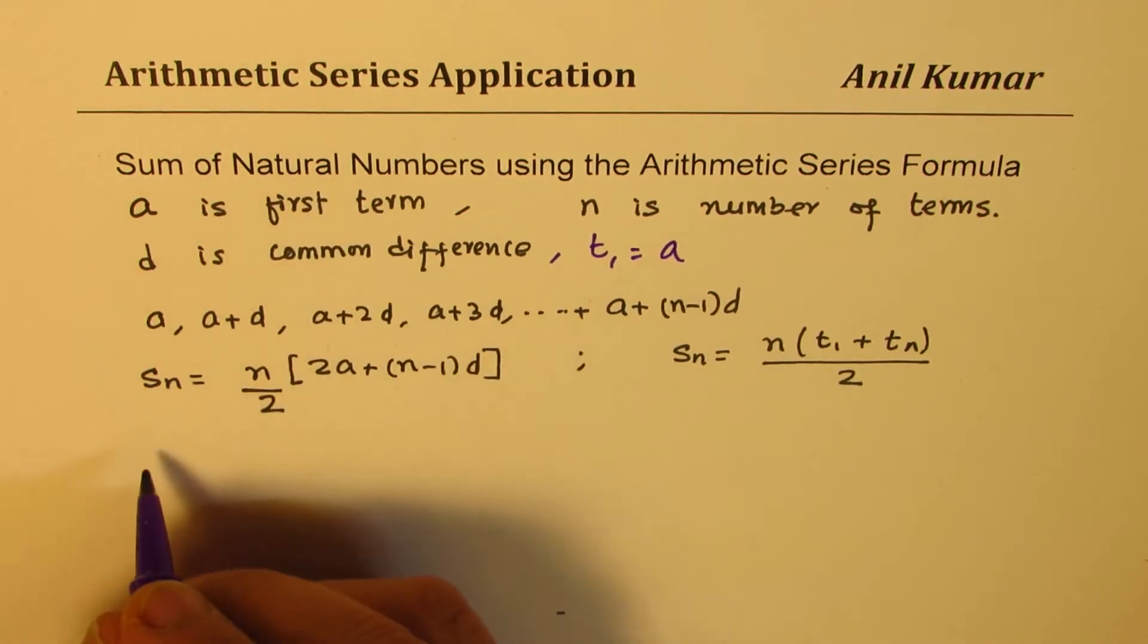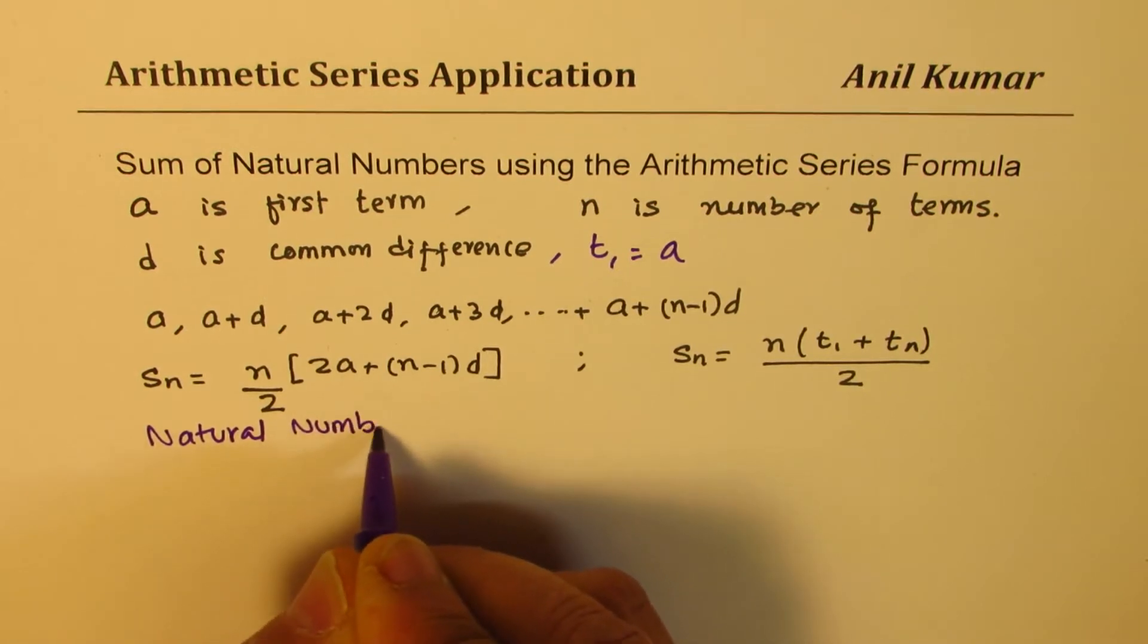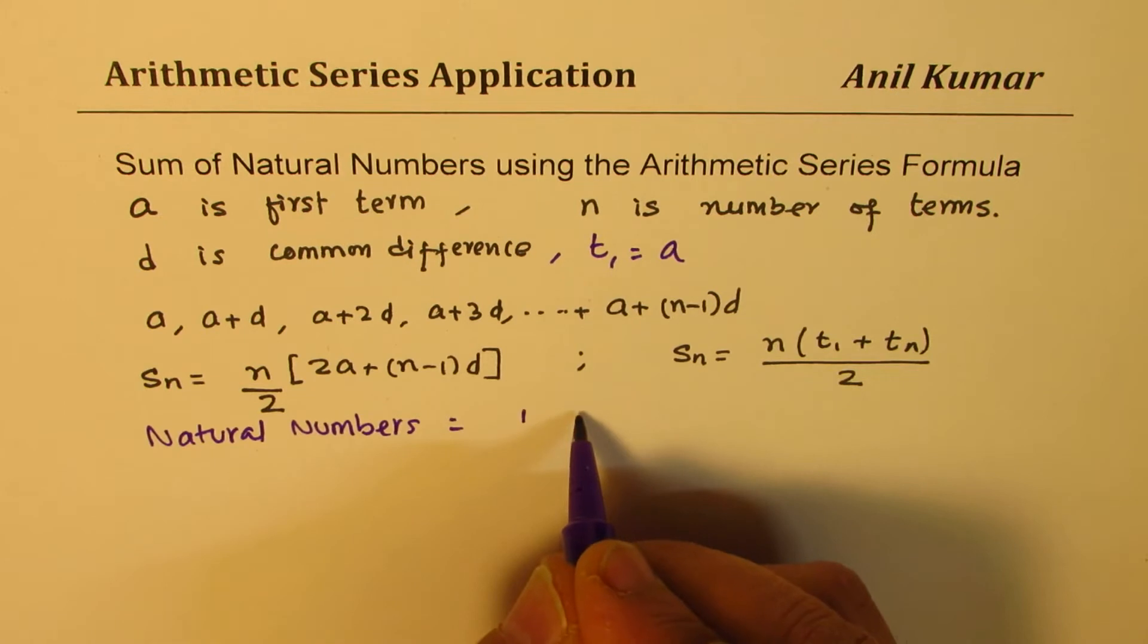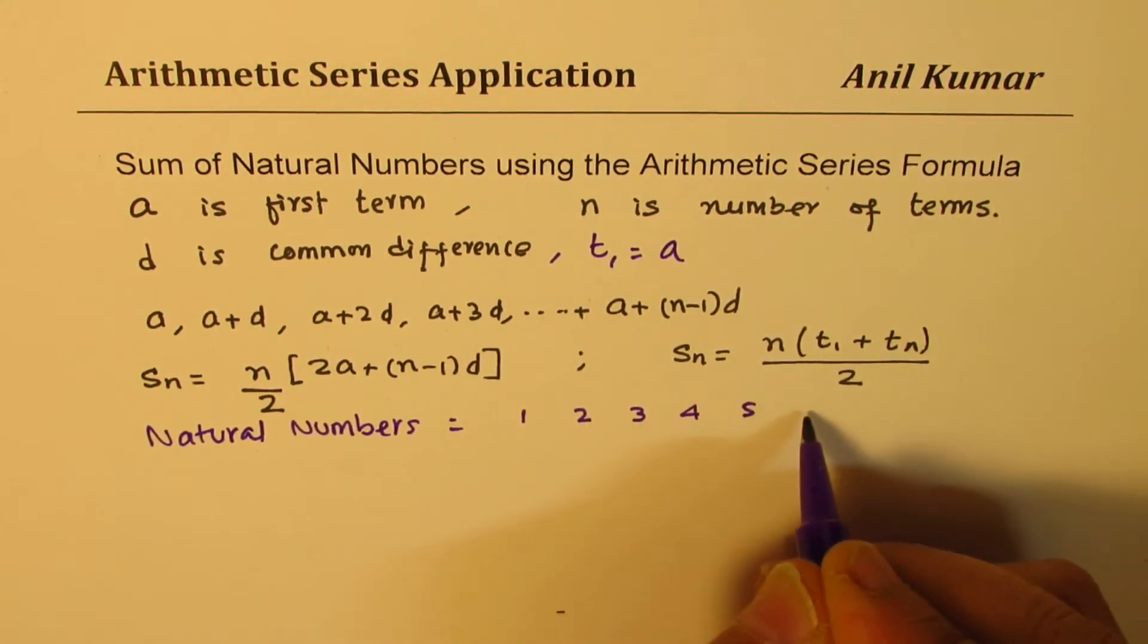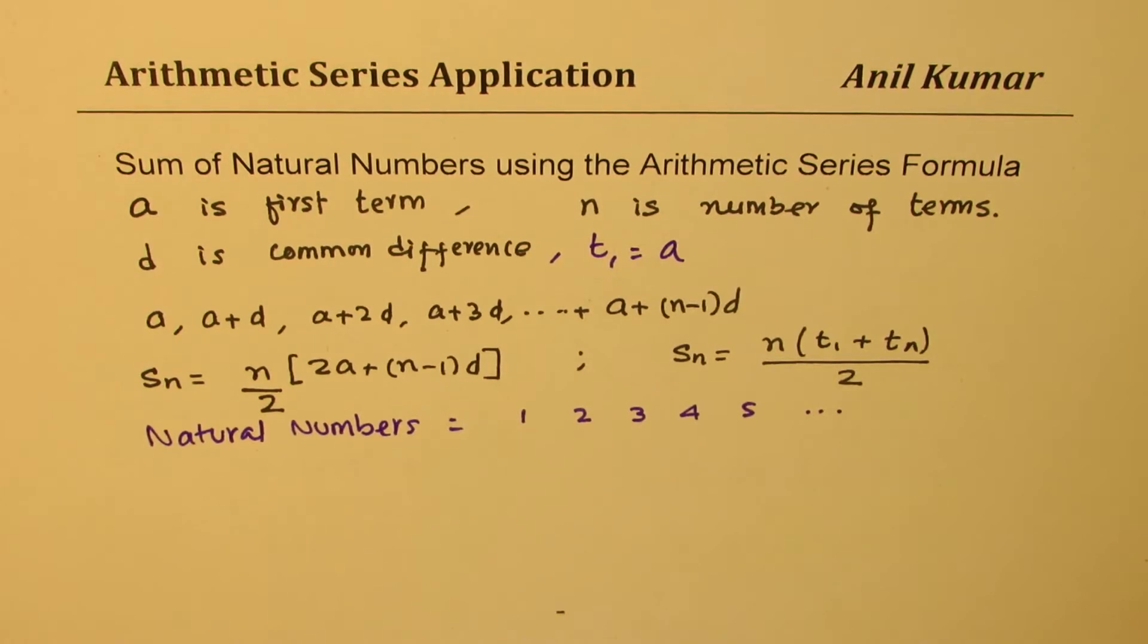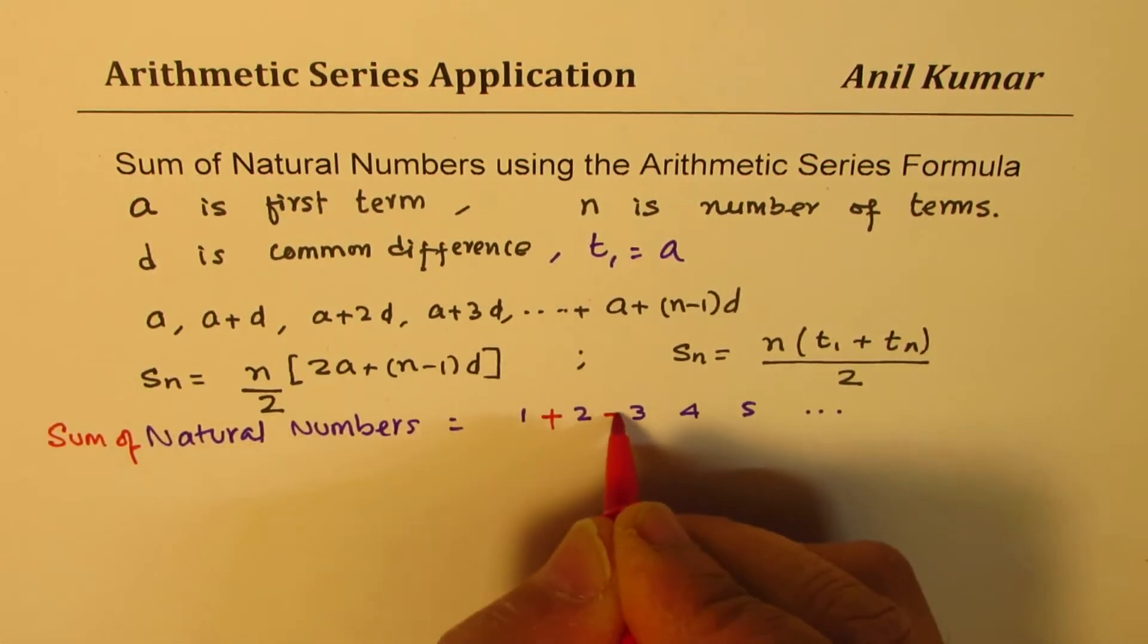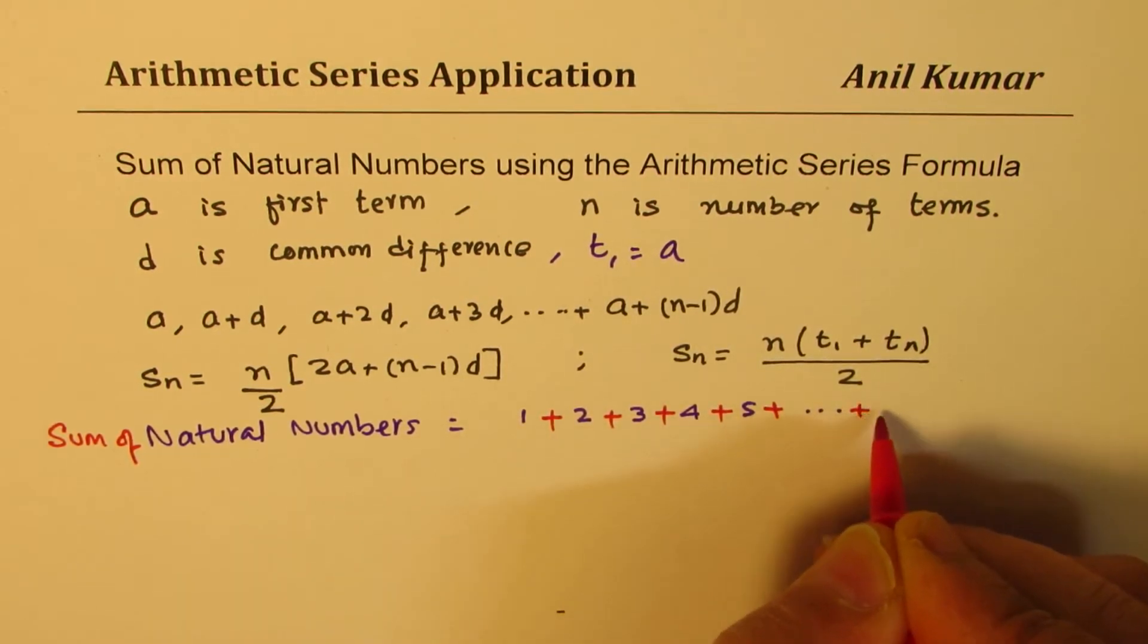Now what are natural numbers? Natural numbers are 1, 2, 3, 4, 5, and so on. These are natural numbers. And when we say sum of natural numbers, that means we have to add them all. So this is an arithmetic series.